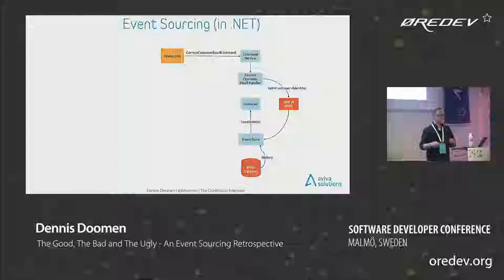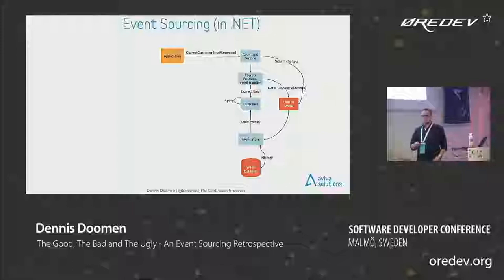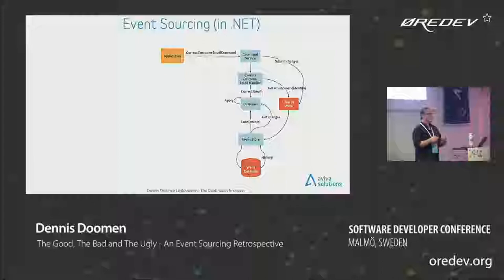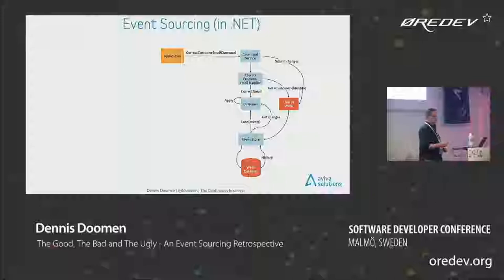At that point you actually execute the command — correct the email address — which applies a change to itself. Then the unit of work is told: I've made a couple of changes, and you send that back to the write database. This is the write side in event sourcing. The problem is you can't actually query on this write database — that's why it's called a write database. You can't say 'give me all the customers allowed to spend more than $10,000 a month.' Does anybody recognize this pattern? CQRS — Command-Query Responsibility Segregation.